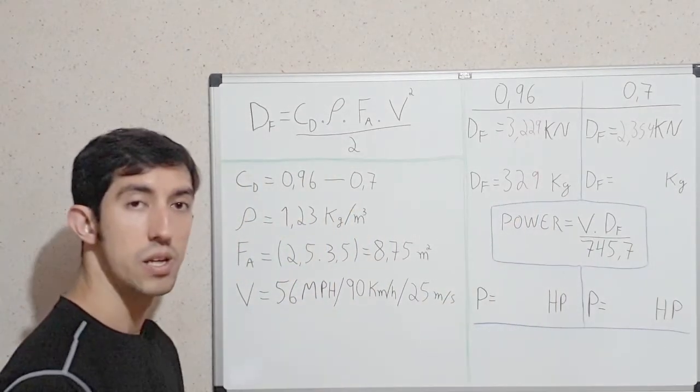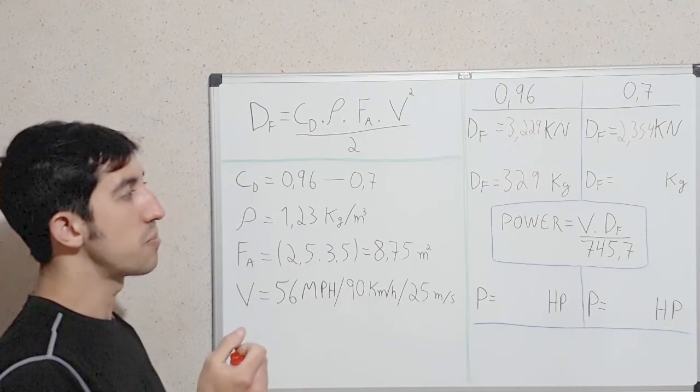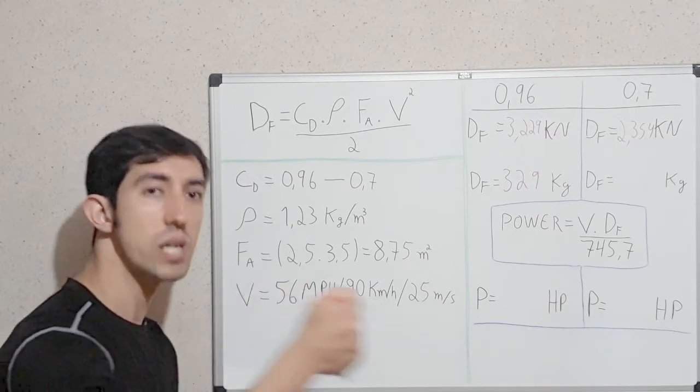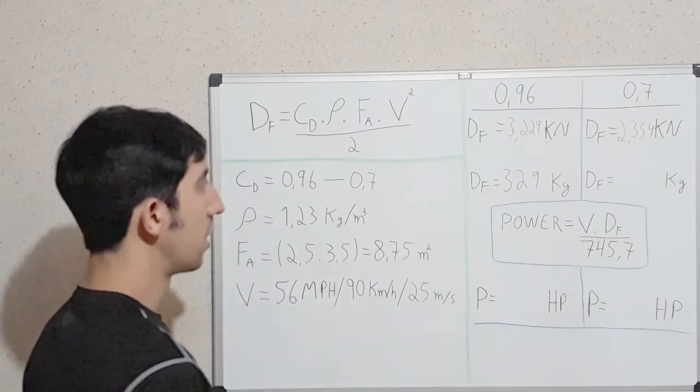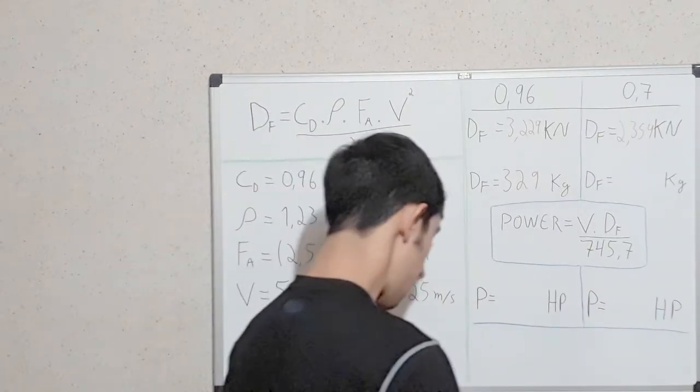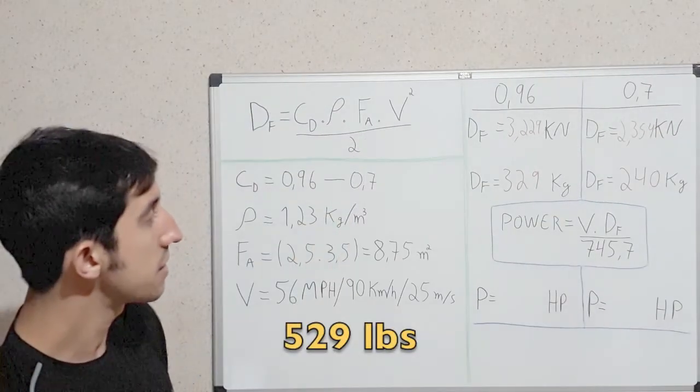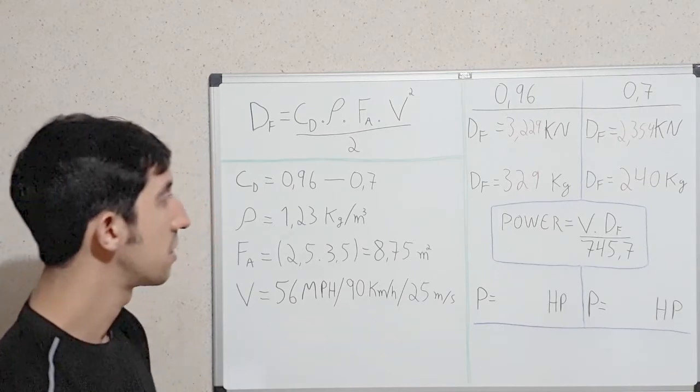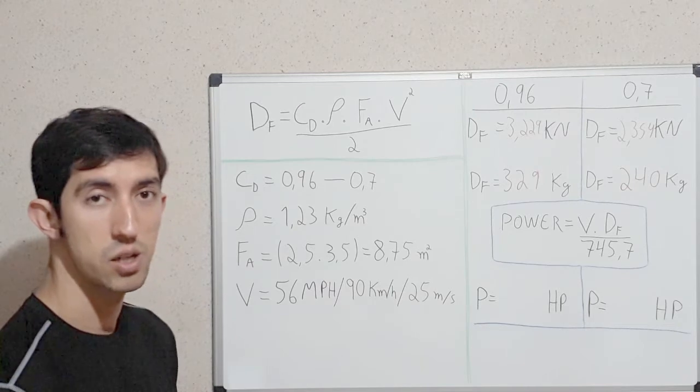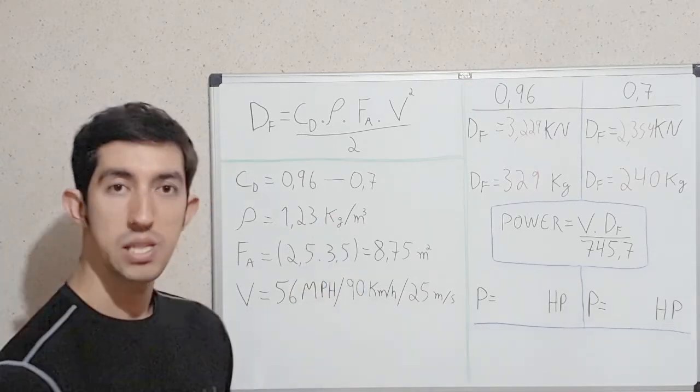So, the truck is making a force of 329 against the wind. If we put the fairing, the drag force will be 240. That doesn't seem too much, but let's see how much horsepower the truck will gain if we put the fairing.